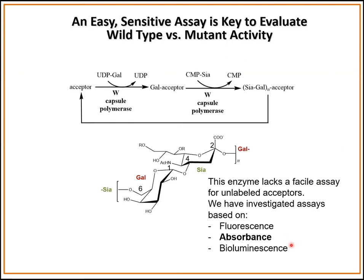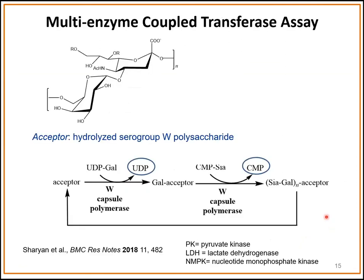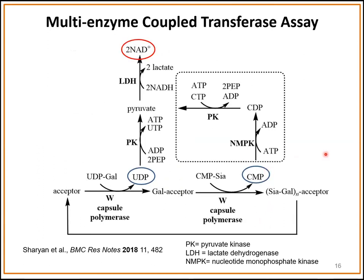We previously worked to find an assay using unlabeled acceptors. One early iteration was using an absorbance-based assay. We published work using a multi-enzyme coupled transferase assay where we used hydrolyzed serogroup W polysaccharide as our acceptor. This assay focuses on production of UDP and CMP, coupling their production by activity of the serogroup W enzyme to NAD oxidation, which we monitor at 340 nanometers.